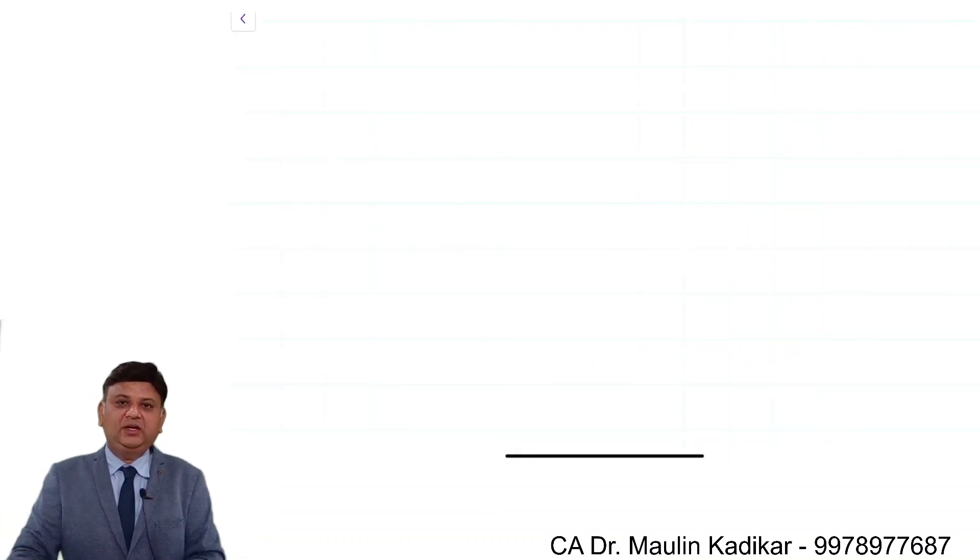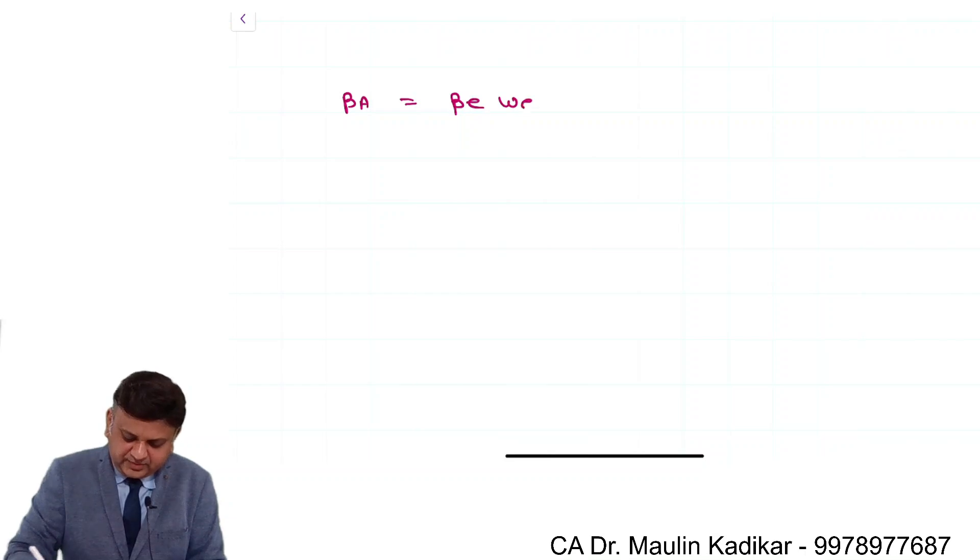So friends, again we have not been given information about the taxes. So we can do the answer like this. Beta of asset is calculated as beta of equity into weight of equity plus beta of debt into weight of debt. That is the way the beta of the asset can be calculated.